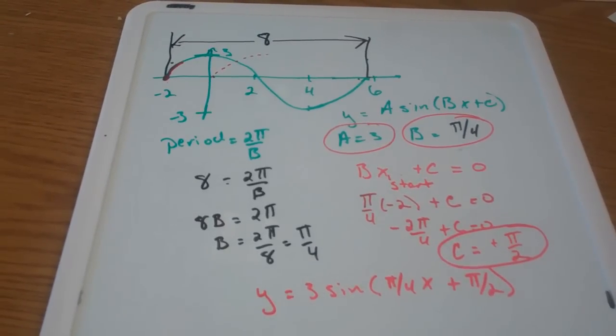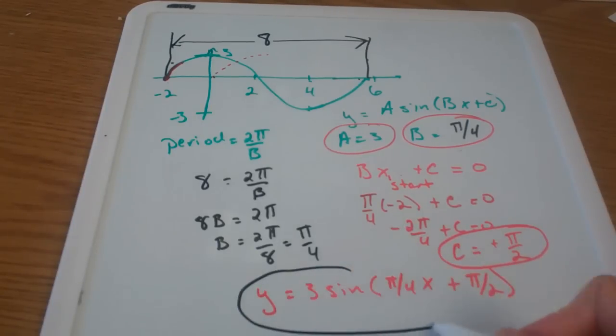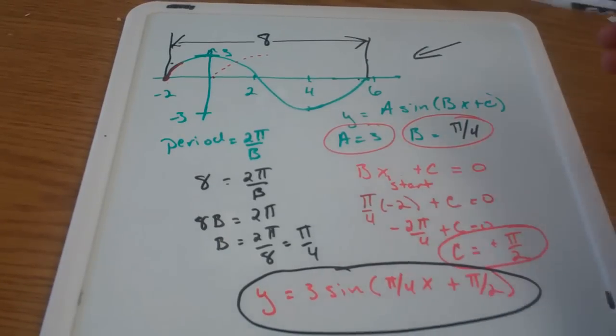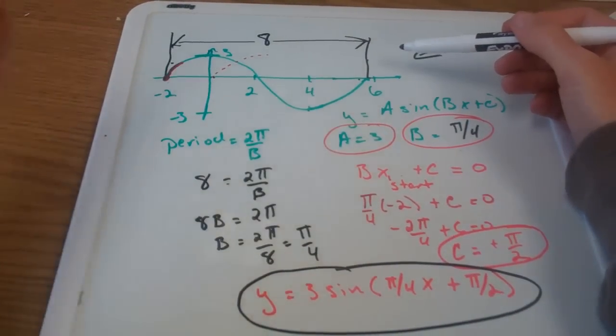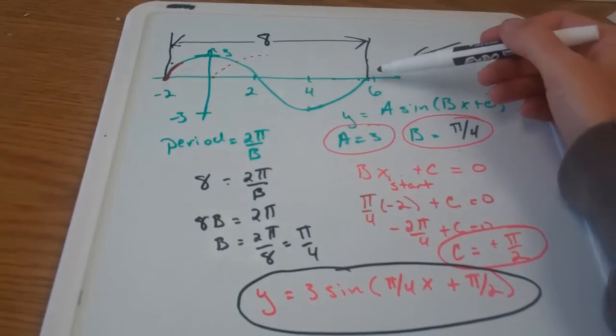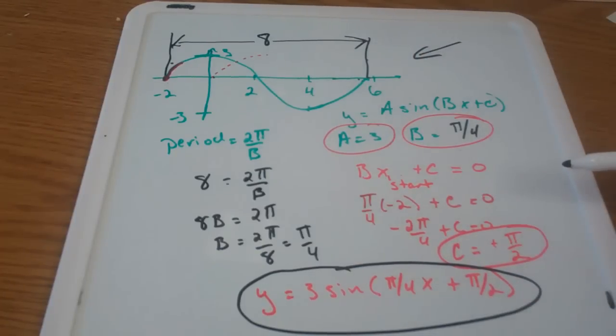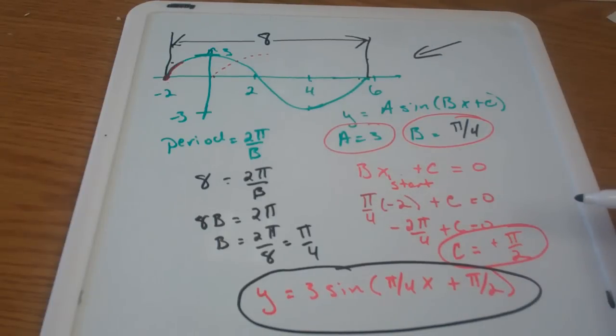And I can check my answer by graphing this equation on the calculator in this window. So graph on your calculator this equation. Set your window. Make sure you're in radian mode to go from x equals negative two to x equals six, and then from y equals negative three to positive three. If you get the same looking graph as what we started with, then it's correct. If not, something's wrong. Thank you for listening.